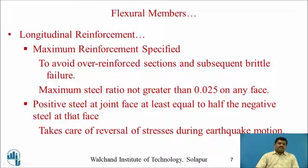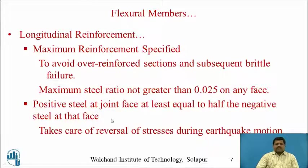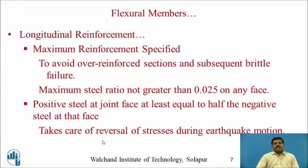Positive steel, which resists positive bending moment and is generally placed at the bottom, must be at least equal to half the negative steel at any joint face. Negative steel resists hogging bending moment and is placed at the top at joint faces. So the bottom reinforcement at the joint face must be at least half the top reinforcement at that joint face, accounting for stress reversal during earthquake motion.